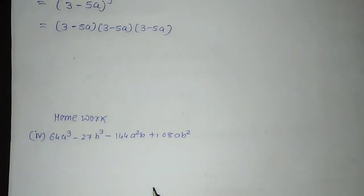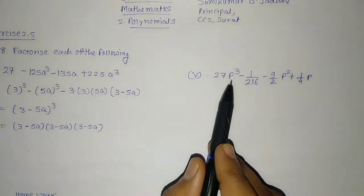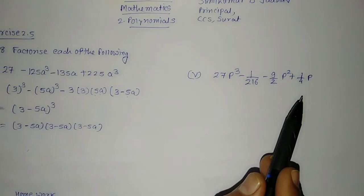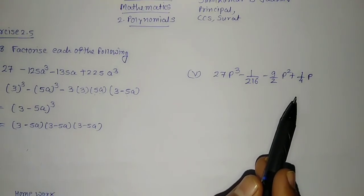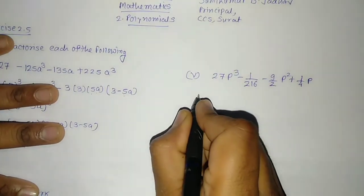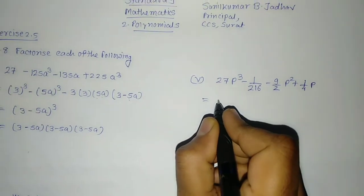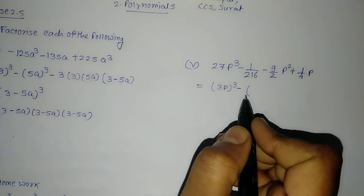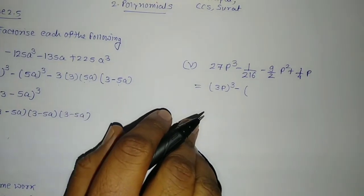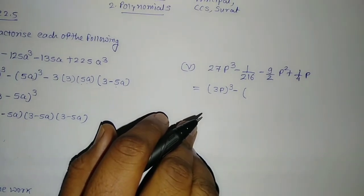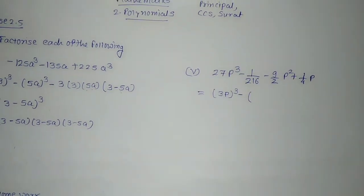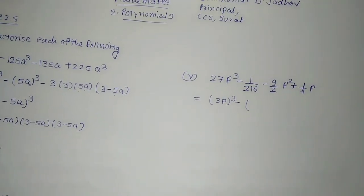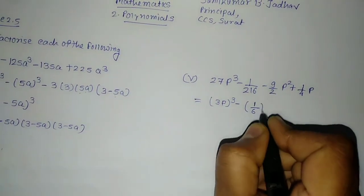We will see question number 5. Let us begin. The 5th one: 27p cube minus 1 upon 216 minus 9 by 2 p square plus 1 upon 4p. We need to convert this in a similar way. For this also we will write it similarly. 27 is a cube of 3, so I will write it as 3p whole cube, minus 1 upon 216. 216 is a cube of 6. So we should write it as 1 upon 6 whole cube.